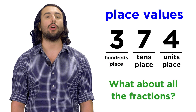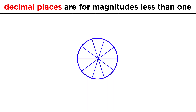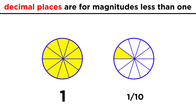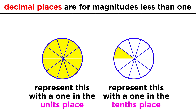But what about all the fractions we learned about? Going back to the pizzas, say they are cut into ten slices. What if we have one and one tenth pizzas? Is there a way to represent that without having to use an improper fraction or mixed number? There certainly is. All we have to do is extend the place values we know to represent these fractions of one as well.